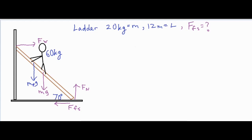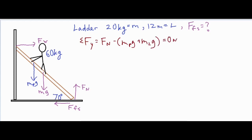Now we have a bunch of different forces, and because the ladder is at rest we can assume that the net force in both directions is zero. So the sum of forces in the y-direction gives us: the normal force minus both mg's — mass of the person plus mass of the ladder — equals zero. And in the x-direction we just have two: the force of the wall minus the force of static friction equals zero newtons.